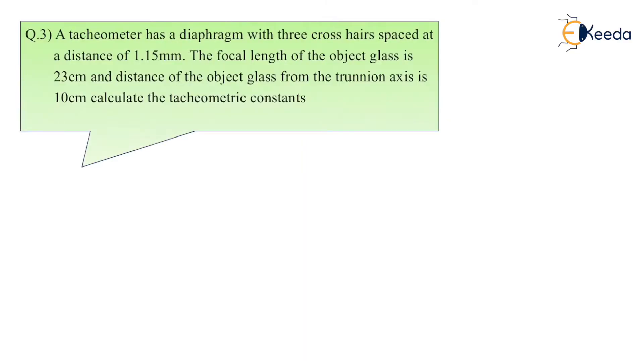Moving on to example number 3. A tachometer has a diaphragm with 3 crosshairs spaced at a distance of 1.15 mm. As we know, we have 3 crosshairs and the distance between upper and middle is 1.15, same for middle and lower, 1.15.